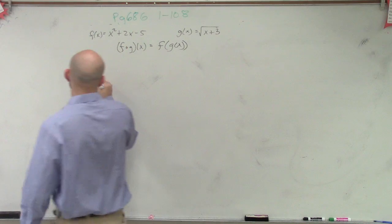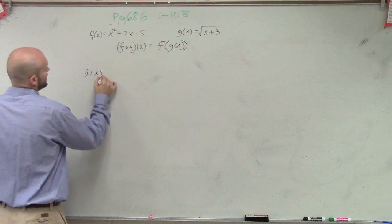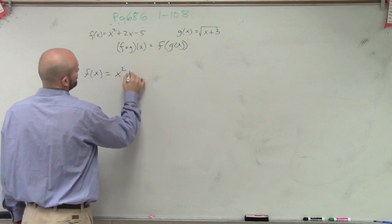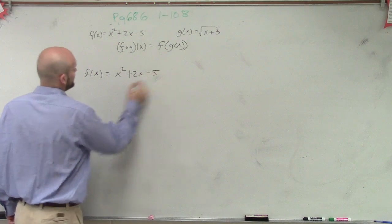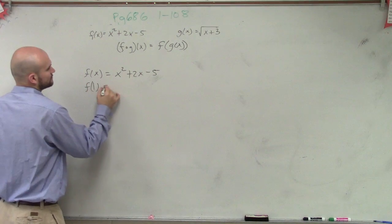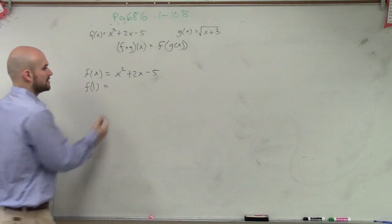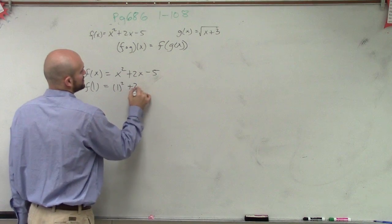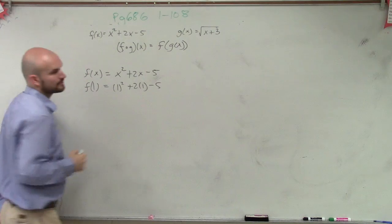And we can just kind of go through this. Ladies and gentlemen, if you know that f of x equals x squared plus 2x minus 5, if I say f of 1, you guys, where do you put the 1 in for? The x, right? So you could say 1 squared plus 2 times 1 minus 5.